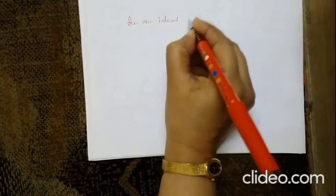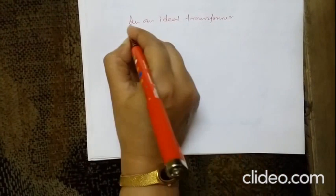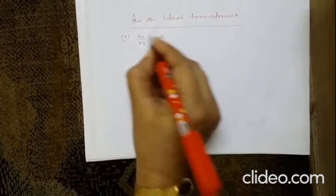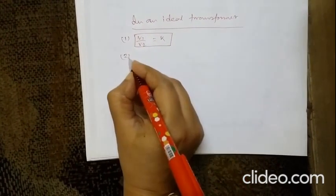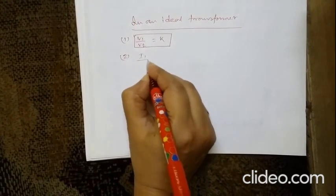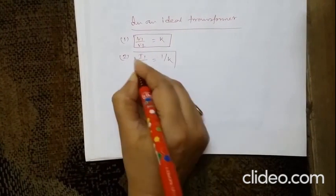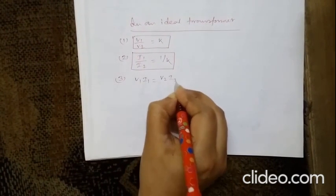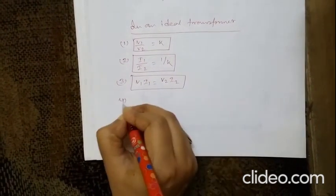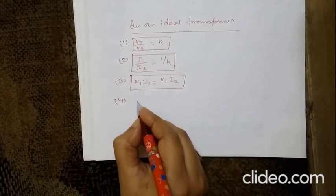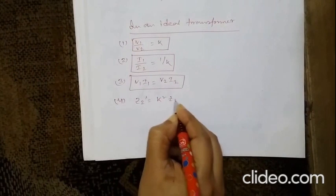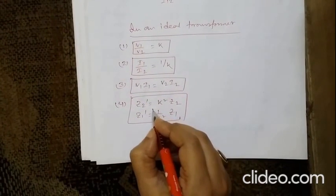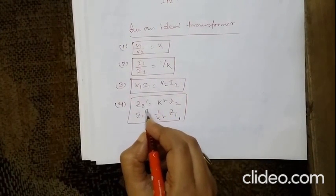In summary, for an ideal transformer: (1) voltages are transformed in the direct ratio of turns, V1/V2 = K; (2) currents are transformed in the inverse ratio of turns, I1/I2 = 1/K; (3) volt-amperes on both sides are equal, V1·I1 = V2·I2; (4) impedances are transformed in proportion to the square of the turns ratio, Z2' = K²·Z2 and Z1' = (1/K²)·Z1. The transferred impedance referred to the primary or secondary side is known as the equivalent impedance on that side.